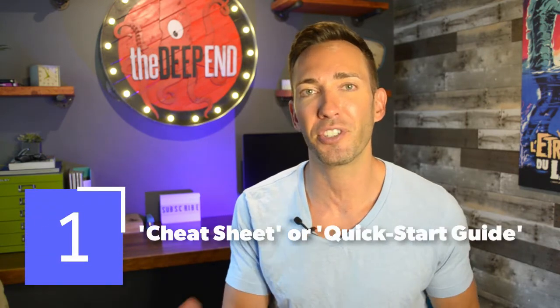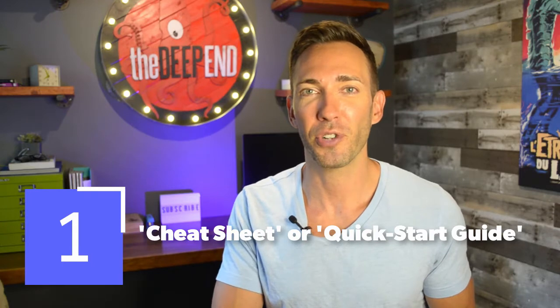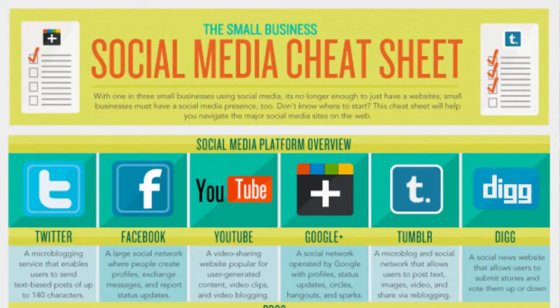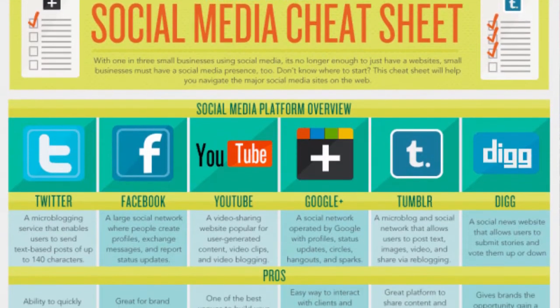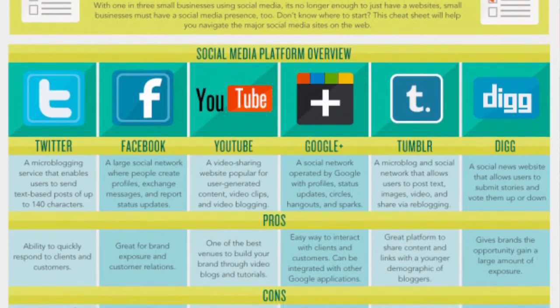The first idea is pretty easy to pull off, and that is a cheat sheet or a quick start guide. This works great as what we call a content upgrade. Let's say you have a blog post about a certain topic — this cheat sheet or quick start guide is an accompanying download that allows people to download it without having to take notes so that they can act on all those tips. You can have just one of these site-wide, or you can have different ones that accompany different blog posts.